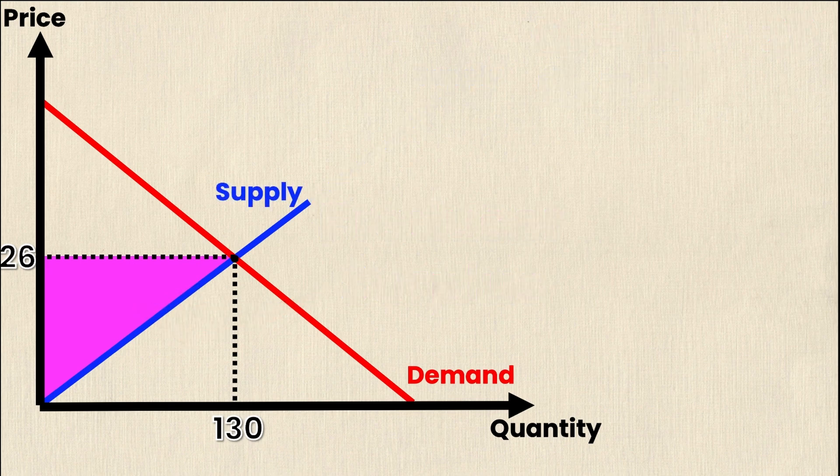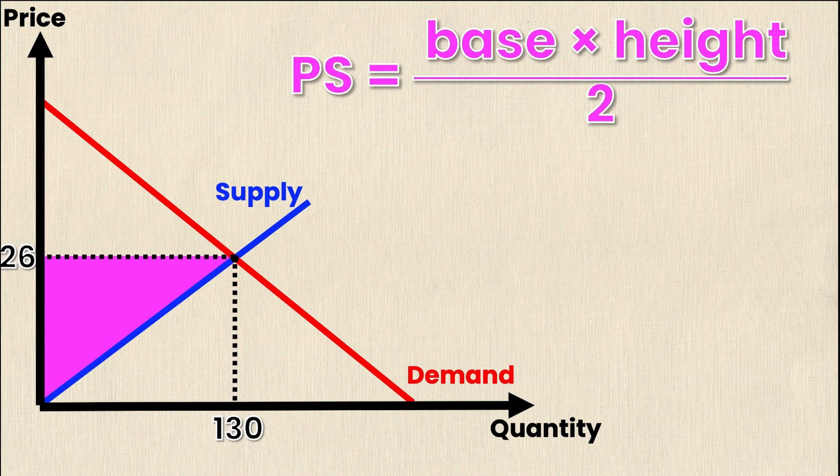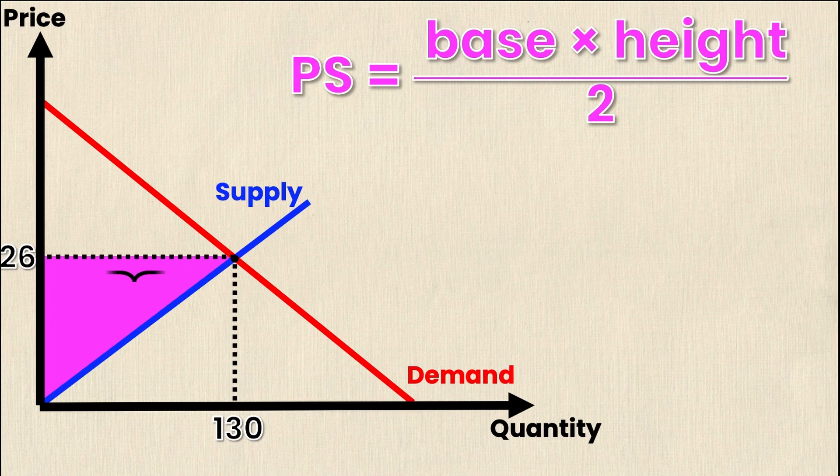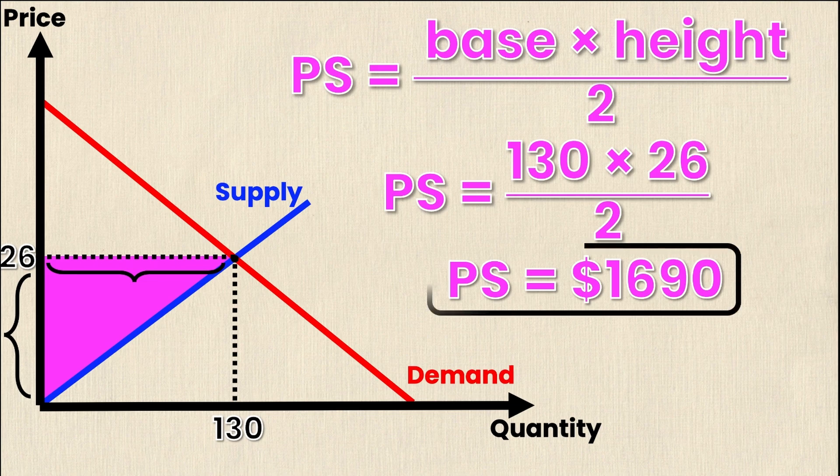So recall from grade 6 geometry the area of a triangle is simply base times height divided by 2. So in this case my producer surplus is simply base times height divided by 2. And luckily for me I have my base and my height of this triangle already given. So you can see the base of the triangle is right here and the height of the triangle is right here and these are nice easy numbers of 130 and 26. So if I substitute them into my equation I get producer surplus is equal to 130 times 26 divided by 2. And with some simple algebra I get a producer surplus value of $1,690.